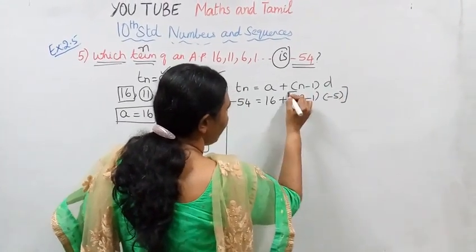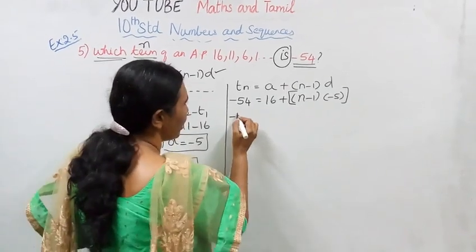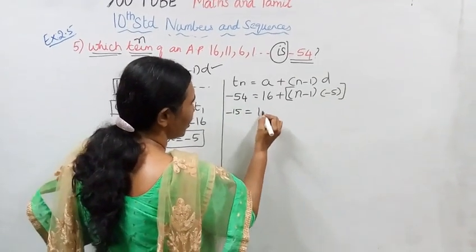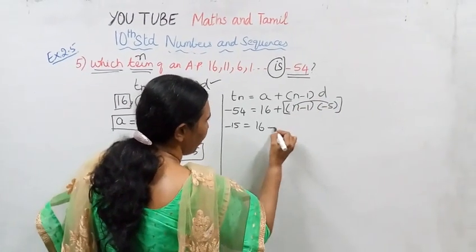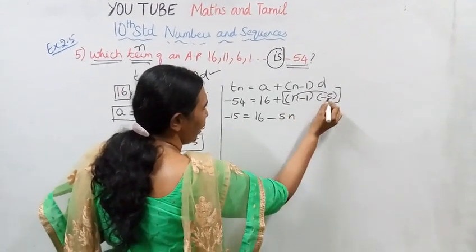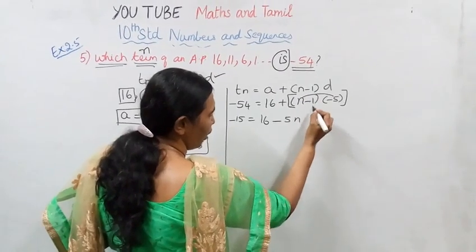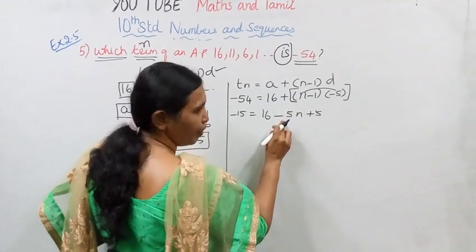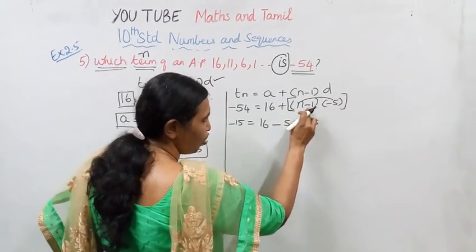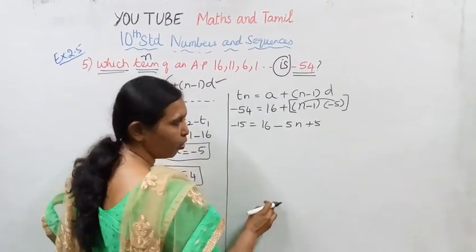Minus 54 equal to 16. Minus 5 into N, minus 5N. Minus 5 into plus 1, plus 5. Minus 5 into N, minus 5 into minus 1, plus 5.